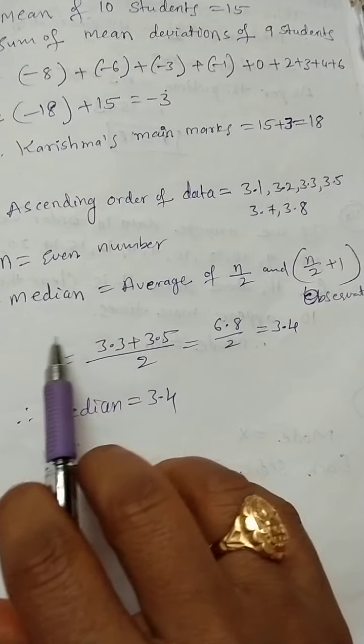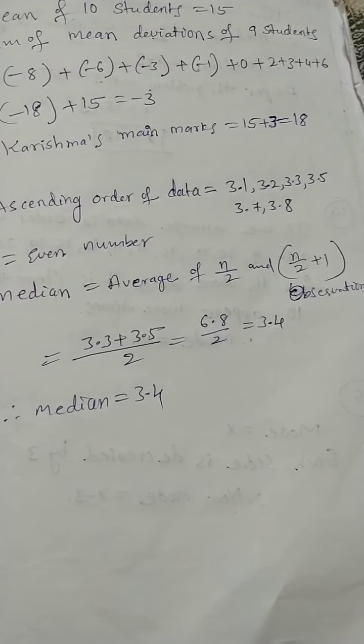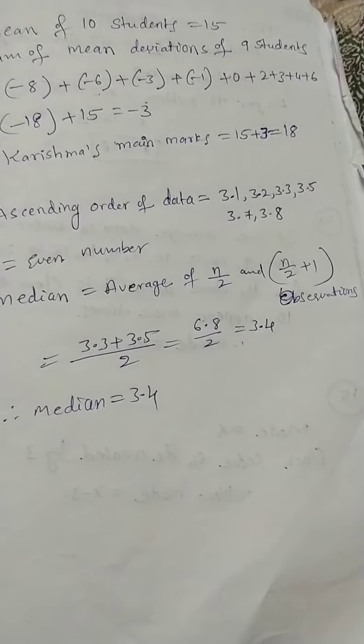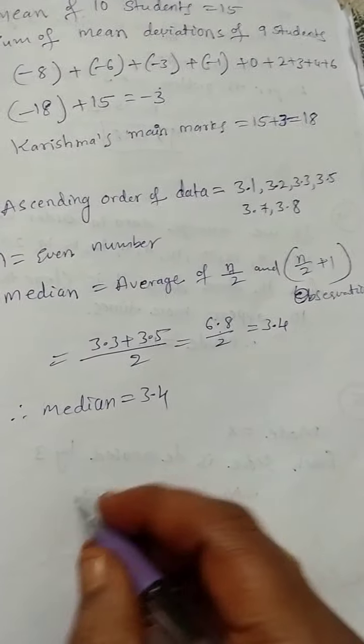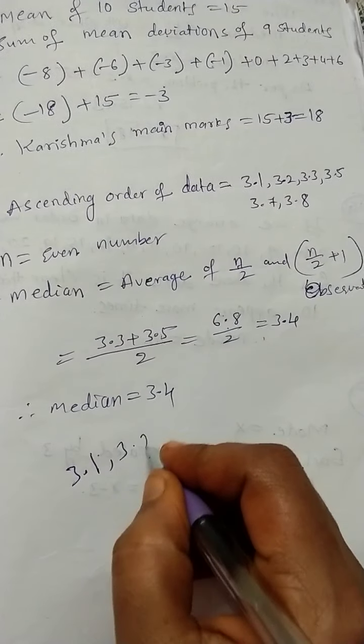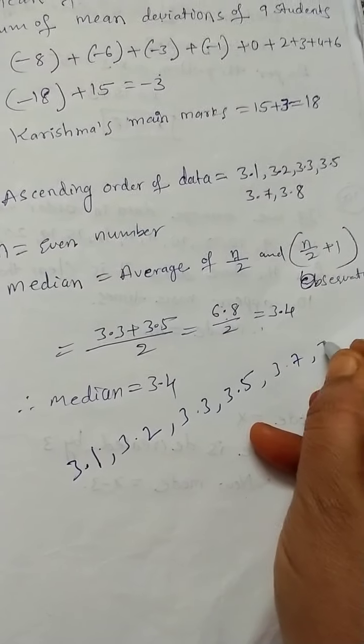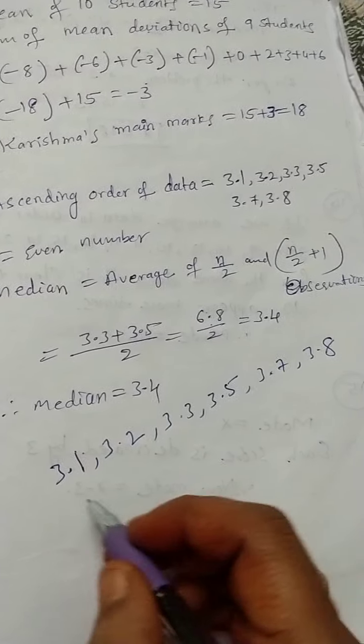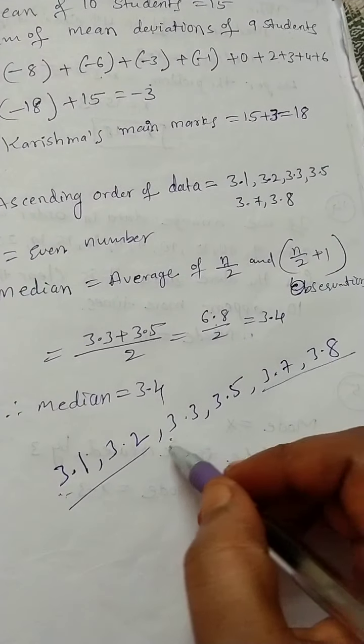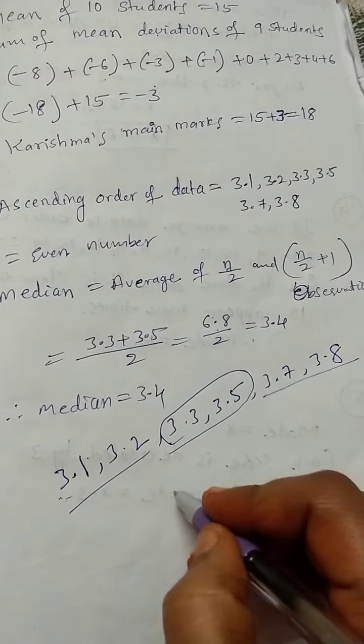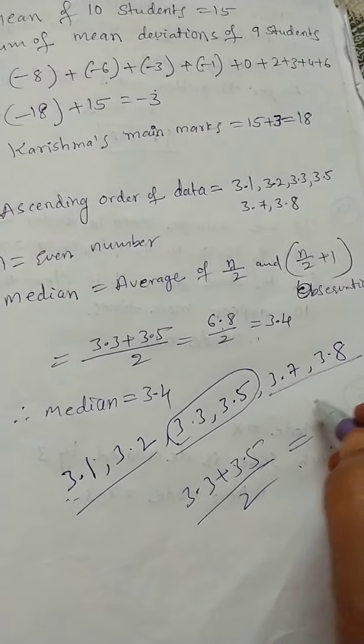If the data is even, then you can use the formula: average of the n/2 and (n/2)+1 observations. Simply, without using the formula, you can see: 3.1, 3.2, 3.3, 3.5, 3.7, 3.8. This is even data. Right side, left side, two observations you can leave, and these are the middle observations.